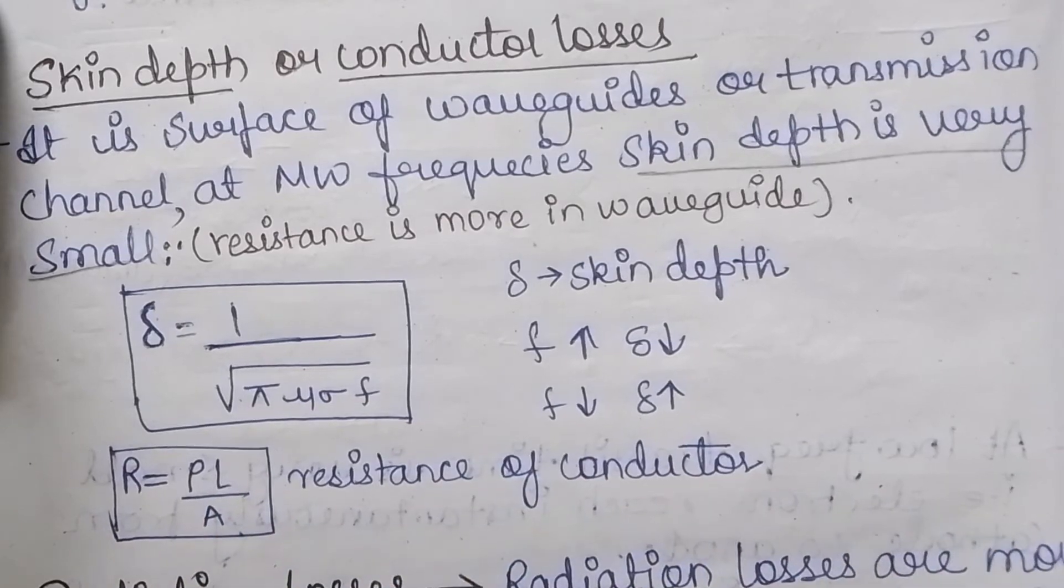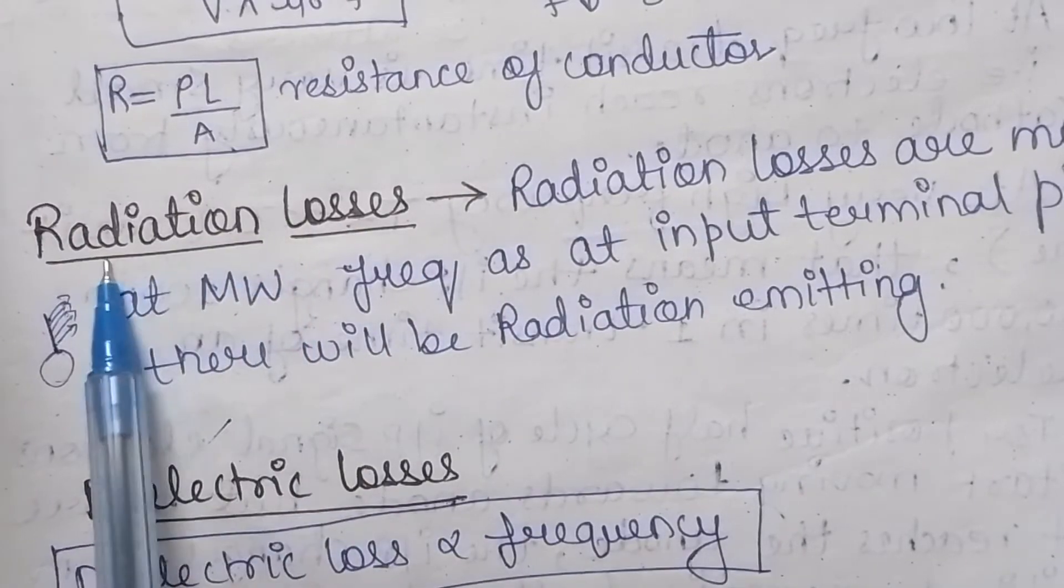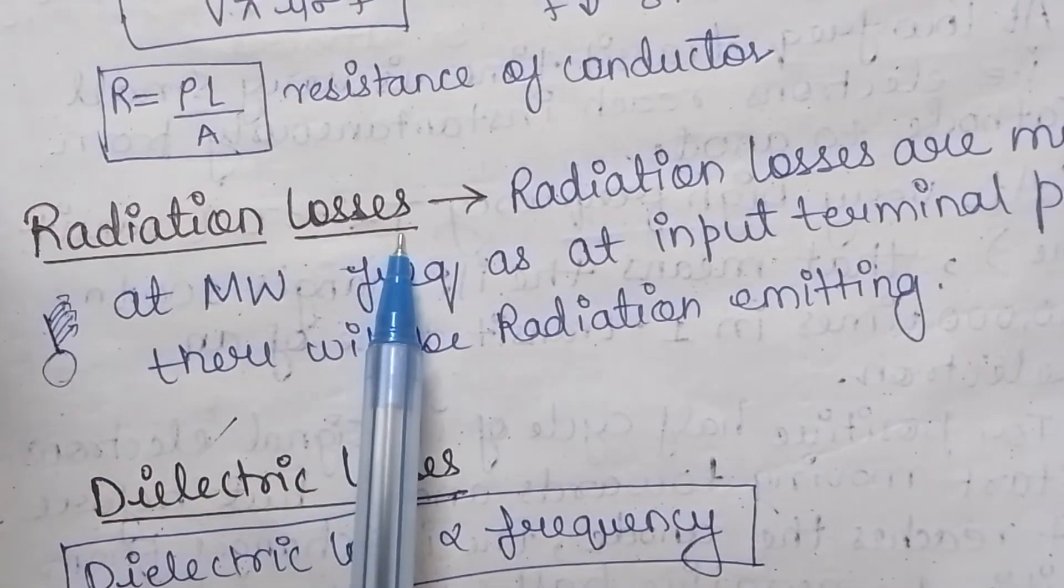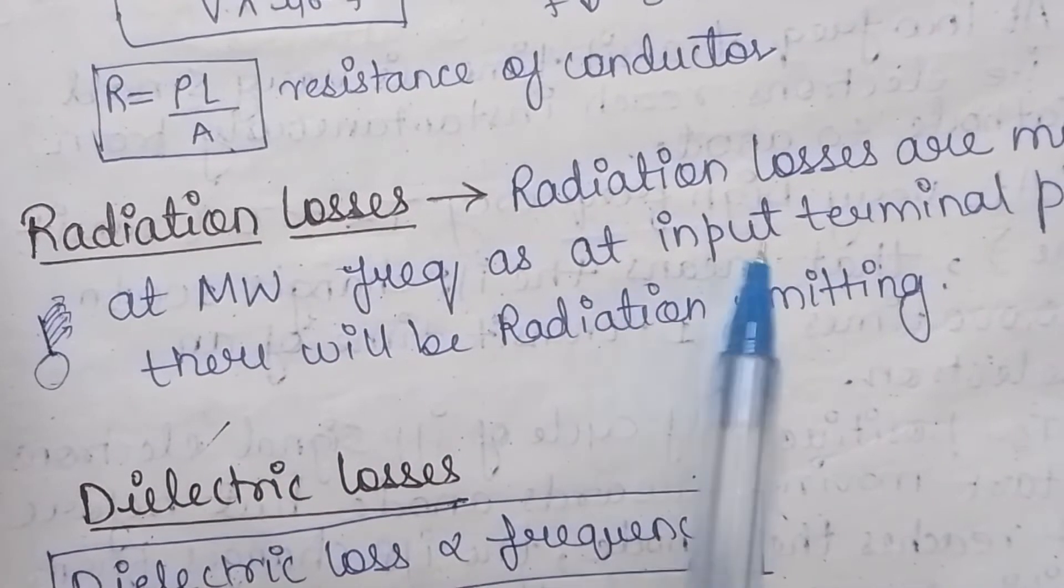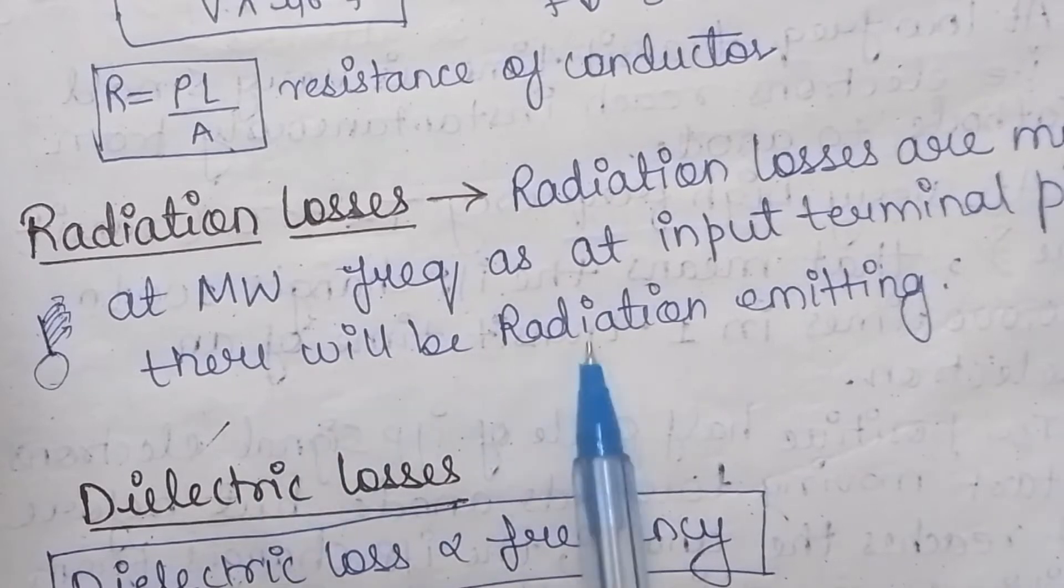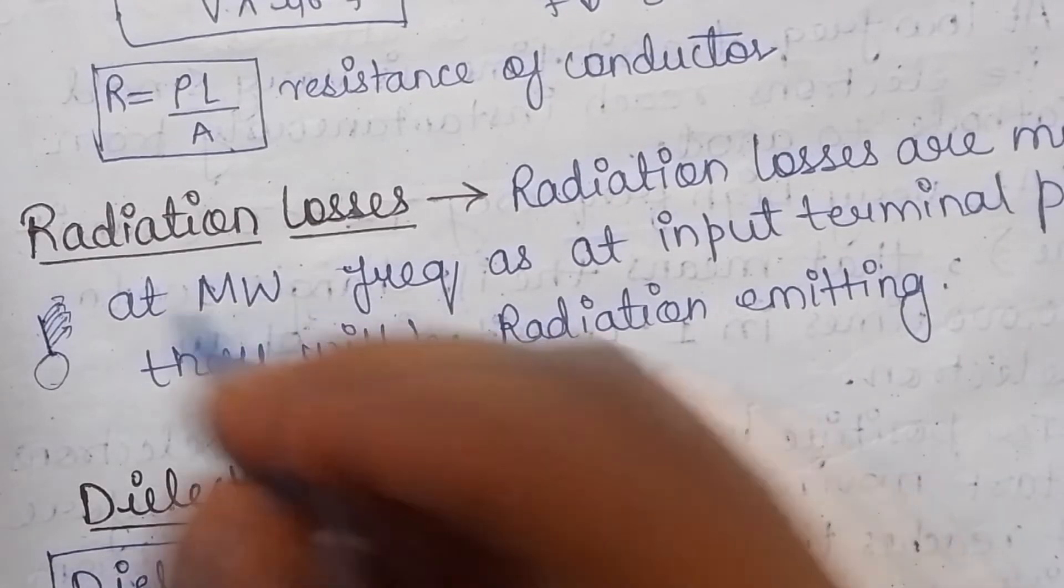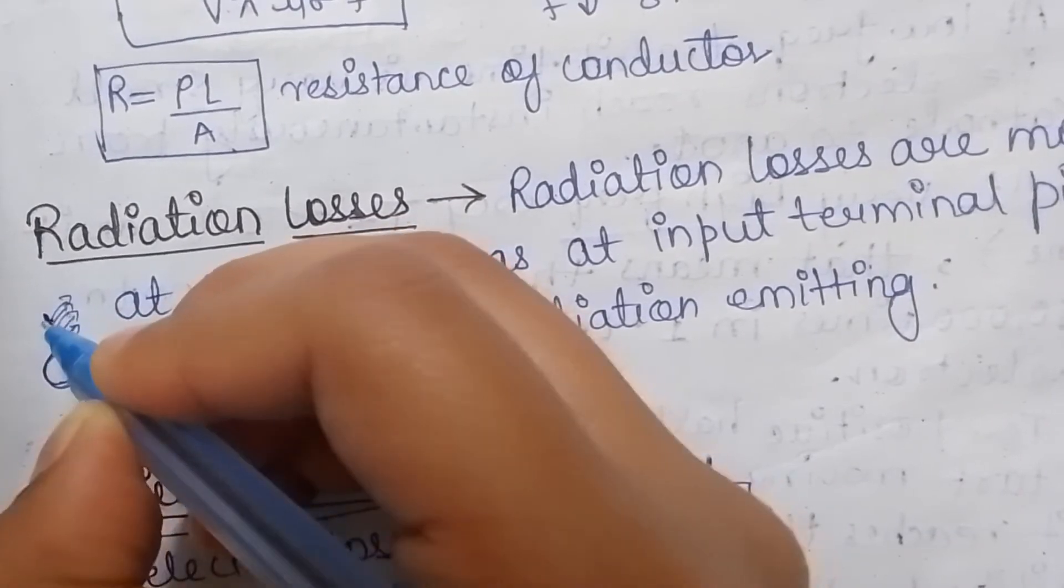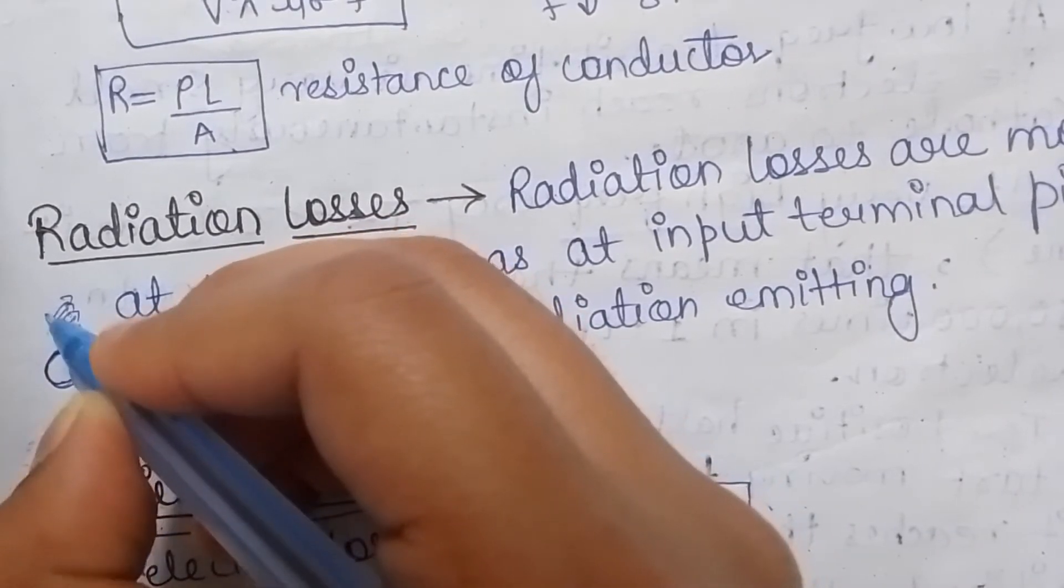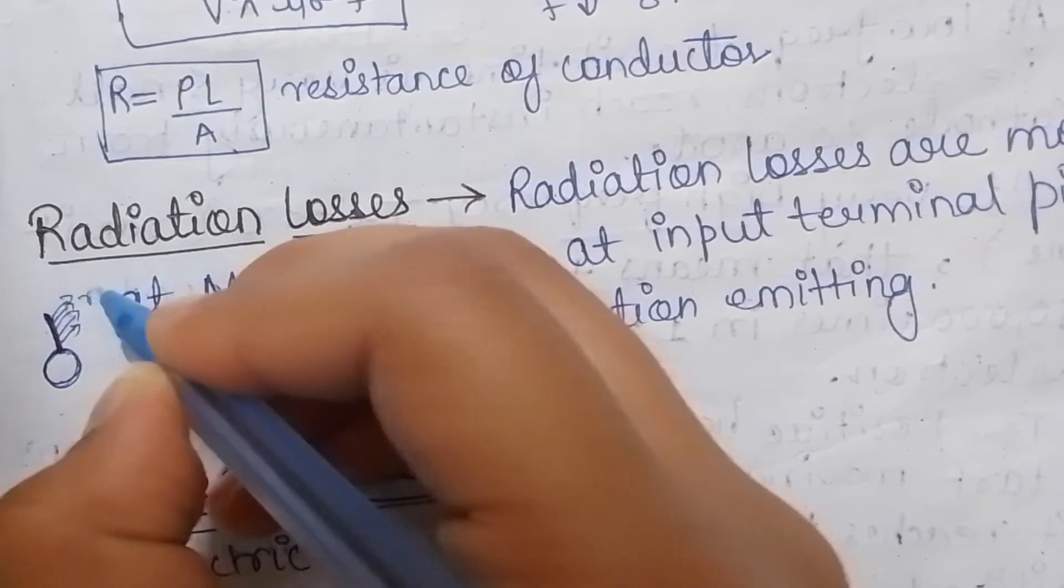The next limitation are the radiation losses. So the radiation losses are more at the microwave frequencies as at the input terminal pins there will be radiation emitting. It means that if there is a device and this is the input pin, at the outer from the outer surface of this pin the radiations will be emitting.